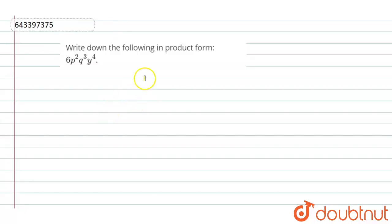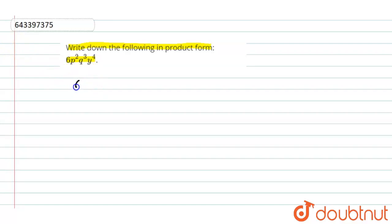Hello. Here we have a question given: write down the following in product form — 6P squared Q cubed Y to the power 4. So, here we have 6P squared Q cubed and Y to the power 4 and we have to write it in product form.